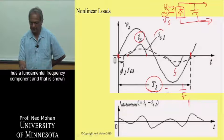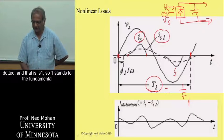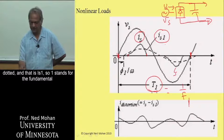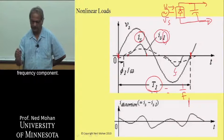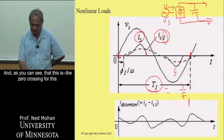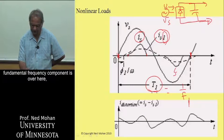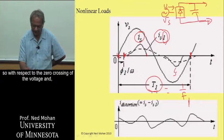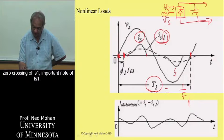So this nonlinear waveform for the current that is drawn has a fundamental frequency component, and that is shown dotted, and that is IS1. So 1 stands for the fundamental frequency component. And as you can see, the zero crossing for this fundamental frequency component is over here.